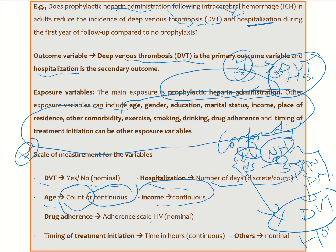Drug adherence can be measured on a scale — so it's nominal data, or we can also treat it as ordinal if adherence somehow has a natural order. Otherwise, a patient can jump from not being adherent to very good adherence within a day without going through all the states, but if we believe there is a natural order, we can call it ordinal data. Timing of treatment initiation is measured in hours, so it's continuous data. All other variables mentioned can be treated as nominal variables of different levels of responses. This is all about variables.